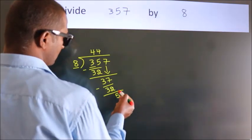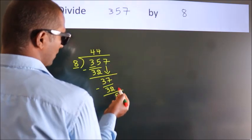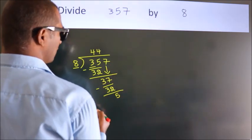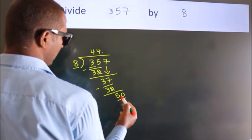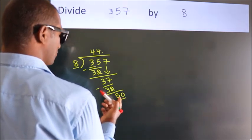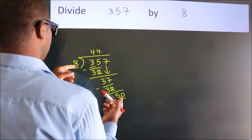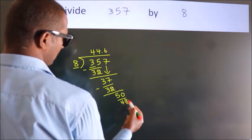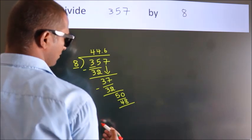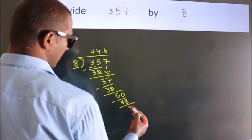After this, no more numbers to bring down. So what we do is we put a dot and take 0. So 50. A number close to 50 in the 8 table is 8 sixes, 48. Now we subtract. We get 2.